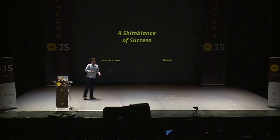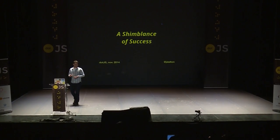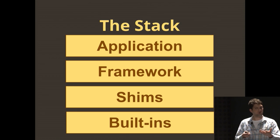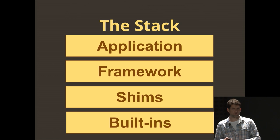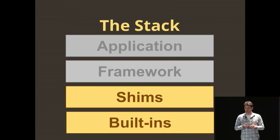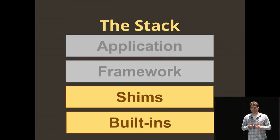So my talk is a shimblance of success. I'm sure you've all seen something like this — a stack where you start with built-ins, then you have shims on top of it, then your framework, and then your application code. But as I've been developing a utility library, Lodash, over the last couple of years, I've seen some problems creep in with the bottom two — the built-ins and shims. This talk will cover some of those issues.